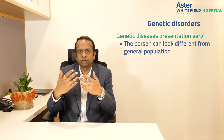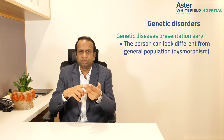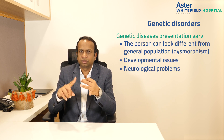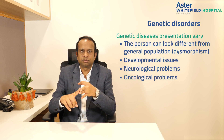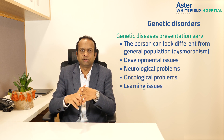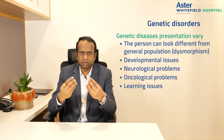Genetic diseases can present in various ways. For example, a child or person may look different from the general population — what we call dysmorphism. There may be developmental issues, neurological problems, oncological problems, or learning issues. There are many ways genetic problems can present.